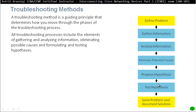All troubleshooting processes include gathering and analyzing information, eliminating possible causes, and formulating and testing hypotheses. Once you propose a hypothesis and test it and it didn't fix the problem, you always go back and revert it. You want to do one test at a time — you don't want to try five or six things simultaneously, because then you won't know which one fixed the problem.